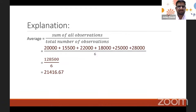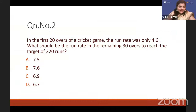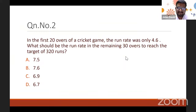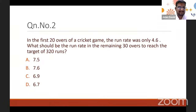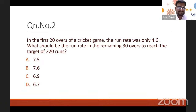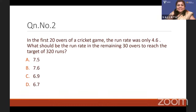Question 2: In the first 20 overs of a cricket game, the run rate was only 4.6. What should be the run rate in the remaining 30 overs to reach a target of 320 runs? Note that run rate itself is an average — runs scored per over.